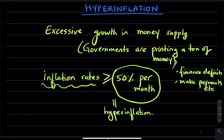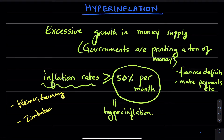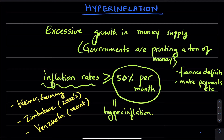There are three different examples that are classic to the understanding of hyperinflation. You can read more about the one in Weimar, Germany. There is one in Zimbabwe that is more recent, in the 2000s. And then the recent one is Venezuela. We're going to take a look at what happened in Zimbabwe.